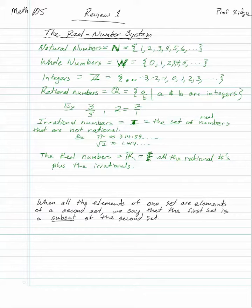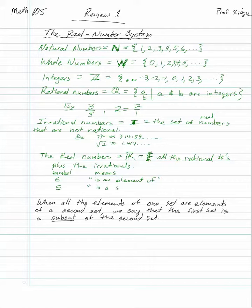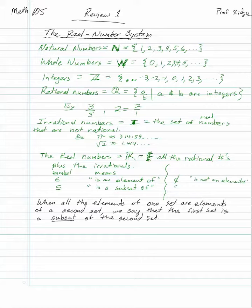Now some notation and symbols we use. An epsilon symbol means 'is an element of' or 'member of.' A U-like symbol means 'is a subset of.' If you put a slash through either of those symbols, you add the word 'not' — so 'is not an element of' or 'is not a subset of.'